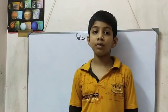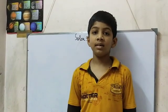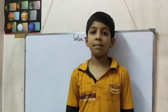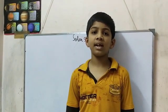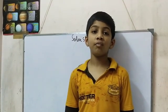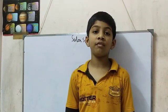Today I am going to explain about the solar system. In the solar system, the outer planets are eight planets, and the inner planets are four.